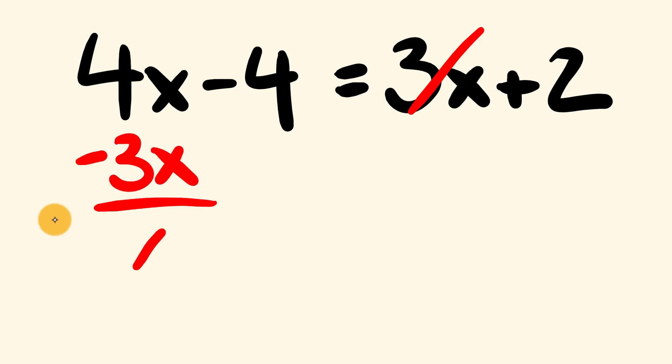So 4x minus 3x that gives us the value of x or just 1x. This is equal to, well we're going to get rid of this negative 4 on the left hand side here and the only way we do that is we add 4 to both sides of the equation.